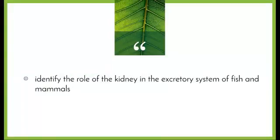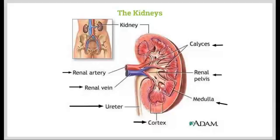We're going to start with the theory dot points, identifying the role of the kidney. The kidney is the main organ involved in osmoregulation, which is the regulation of water and salt concentration, and the excretion of wastes in mammals. The kidney filters the blood of metabolic waste, such as urea, and maintains a stable concentration of water in the bloodstream.